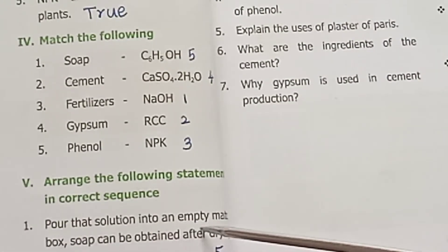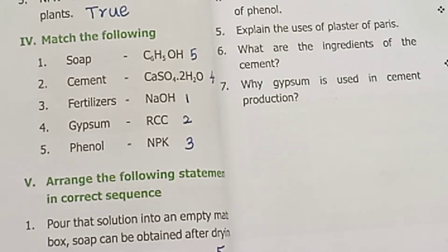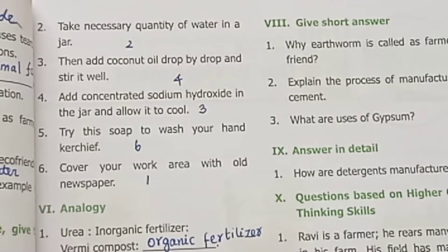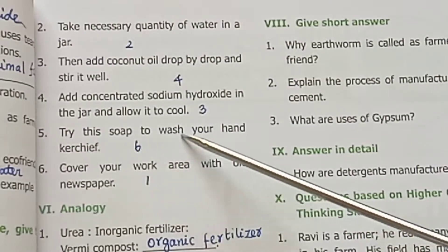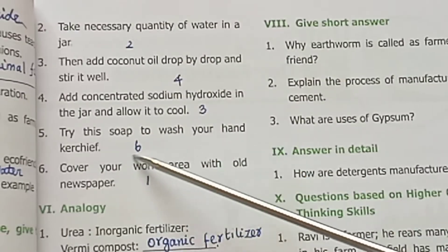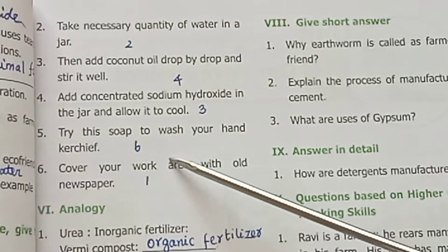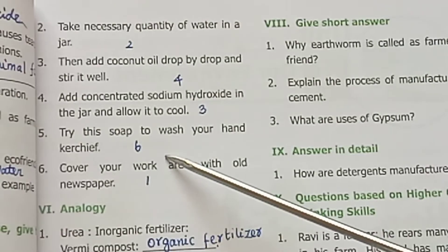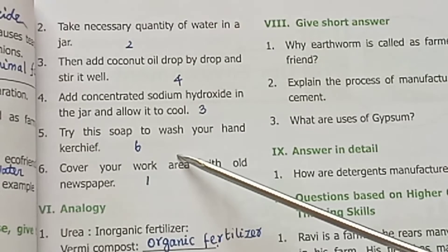Pour that solution into an empty matchbox — soap can be obtained after drying. Try the soap to wash a handkerchief well. This is the procedure for the preparation of soap.